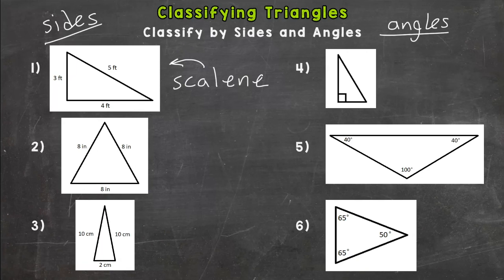Let's go to number two. As you can see, all the sides are eight inches, all of them are the same. If they are all congruent, we call that type of triangle equilateral. So this is an equilateral triangle.